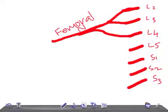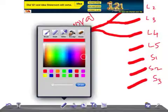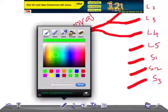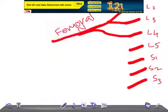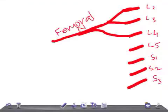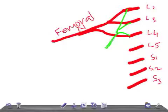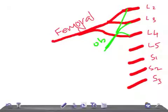Some fibers from L2, L3, and L4 together form a nerve known as the obturator nerve. The obturator nerve is another important nerve of the lower limb.